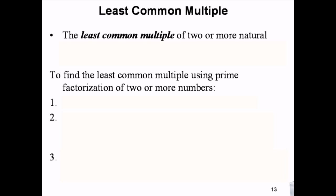Greatest common denominator — or rather, greatest common factor. The greatest common factor is the largest number that will go into two numbers.